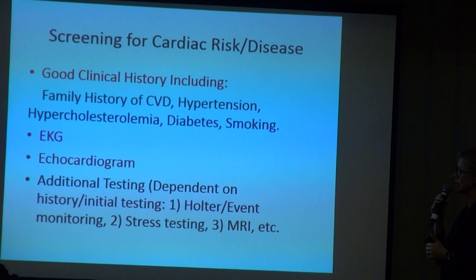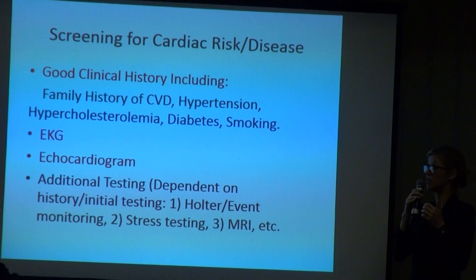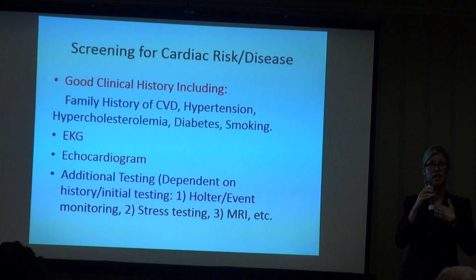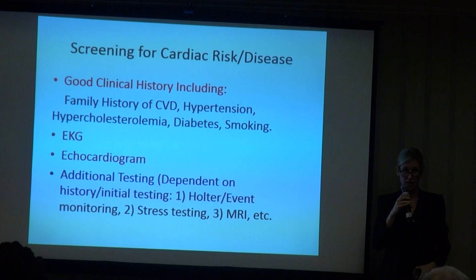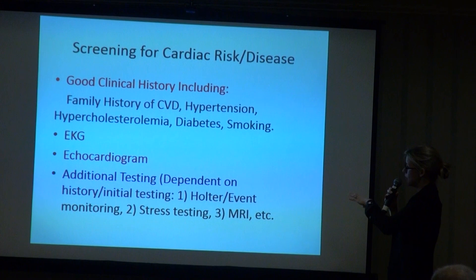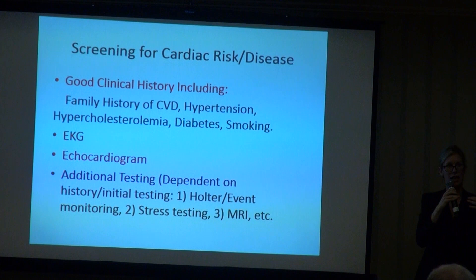Additional testing is dependent on the initial results. If there's a strong family history of heart disease, stress tests and a good cardiologist should see you. A Holter event monitor — something worn on the body — can detect significant arrhythmias if you have an abnormal EKG or are getting dizzy episodes or palpitations. You want to find that out before you have a really bad one. There are also newer MRI techniques that can look at whether there's inflammation in the heart muscle or damage related to vascular disease.